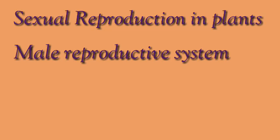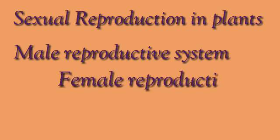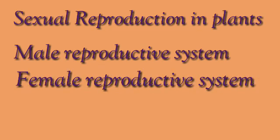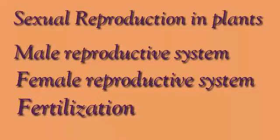In the previous video we learned about sexual reproduction in plants, the male reproductive system, and the female reproductive system. The male produces sperm and the female produces the ovum, and we saw the fertilization process.